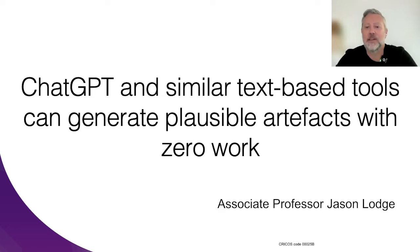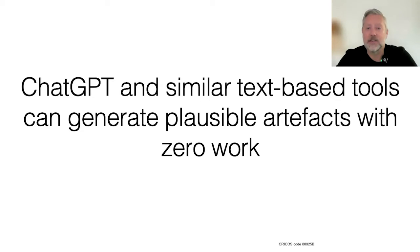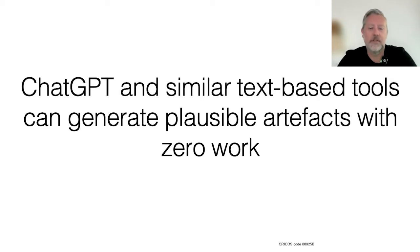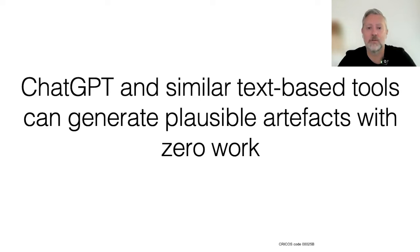The core issue we're grappling with — the one that's caused a lot of panic since the beginning of the year — is that AI tools can be used to generate plausible artefacts that can be submitted for assessment tasks requiring almost no work whatsoever. Contract cheating and other nefarious aspects of student learning posed some of the same challenges, but whereas contract cheating required students to pay money and potentially be blackmailed, these tools are available for free everywhere and increasingly embedded within the productivity tools we're all using.